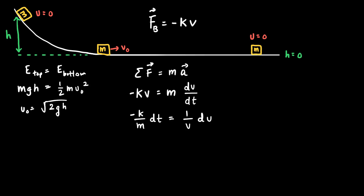Now I can integrate the left-hand side, which includes dt, from t equals 0 — where the cart has initial velocity v₀ — to an arbitrary time t. And I can integrate the right-hand side, which includes v and dv, from the velocity at t equals 0, which is v₀, to the velocity at arbitrary time t, which is v — the same variable in the braking force equation, minus kv.